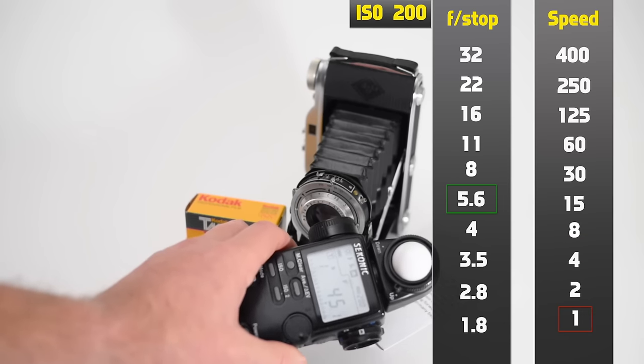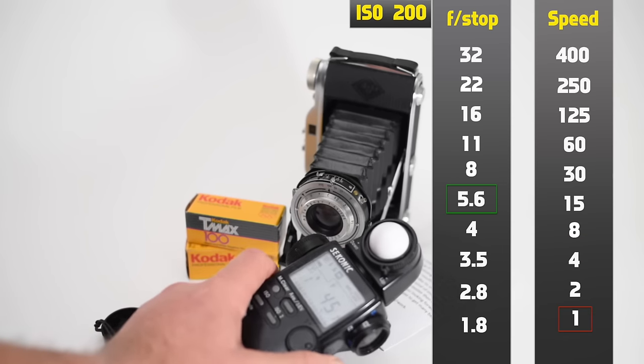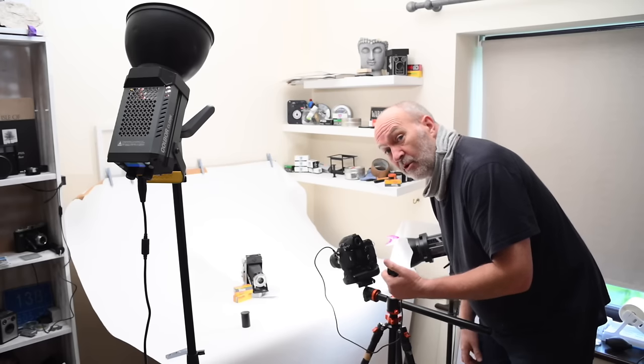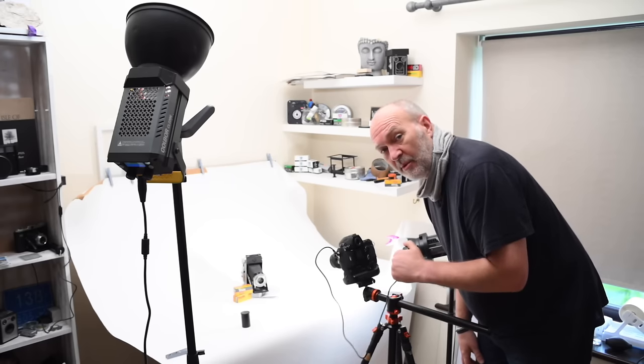And I'm going to go over two stops, and then over three stops, over four stops, over five, and over six stops exposure. So I'm going to be overexposing by six stops. Okay, so now all that's done, all I've got to do is take my shots, overexpose, and see what we get.